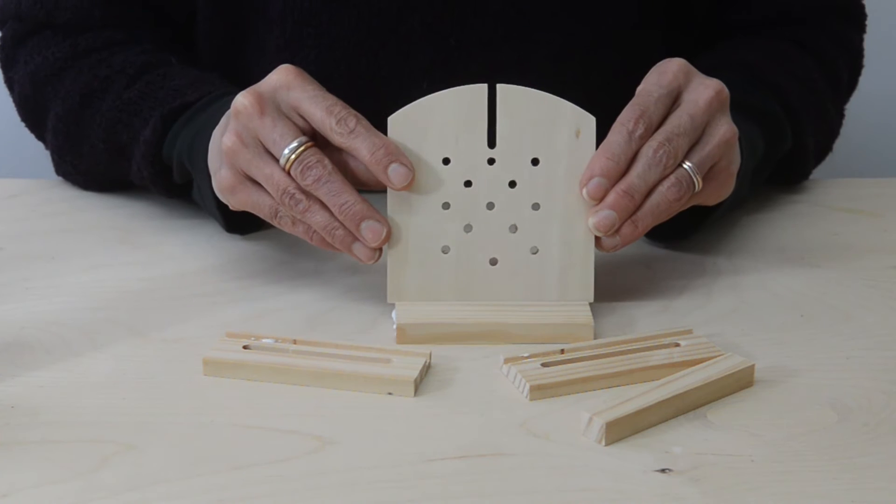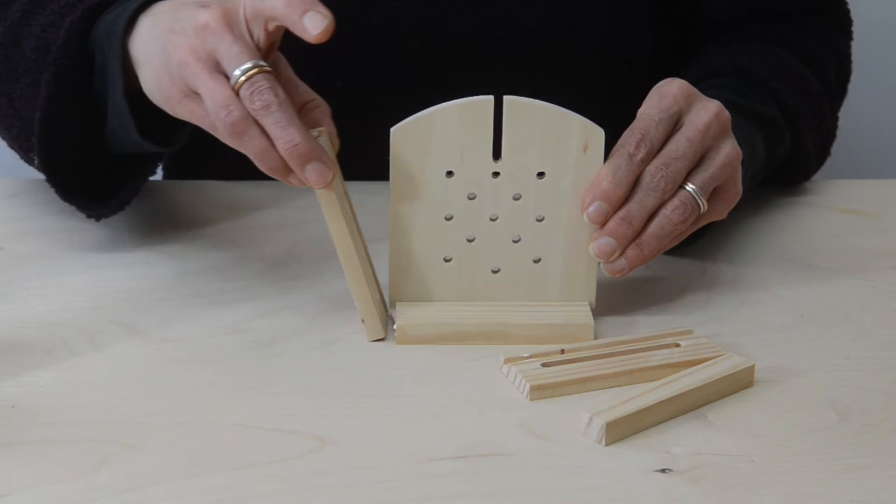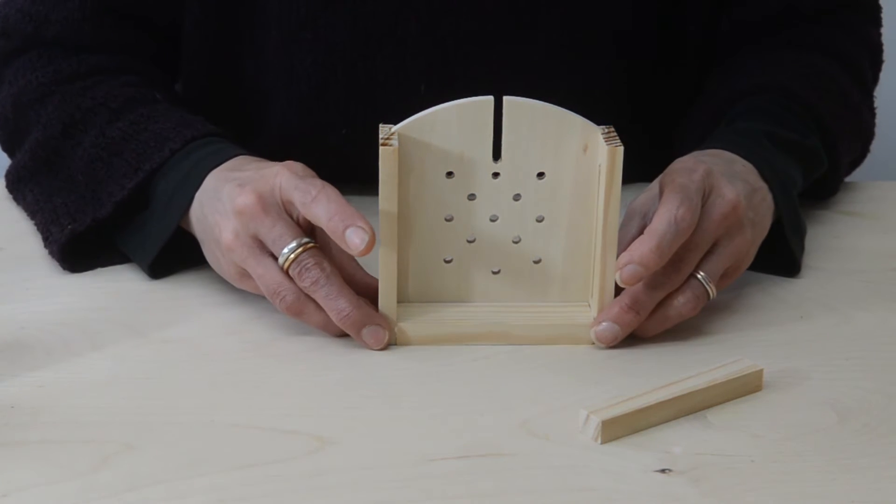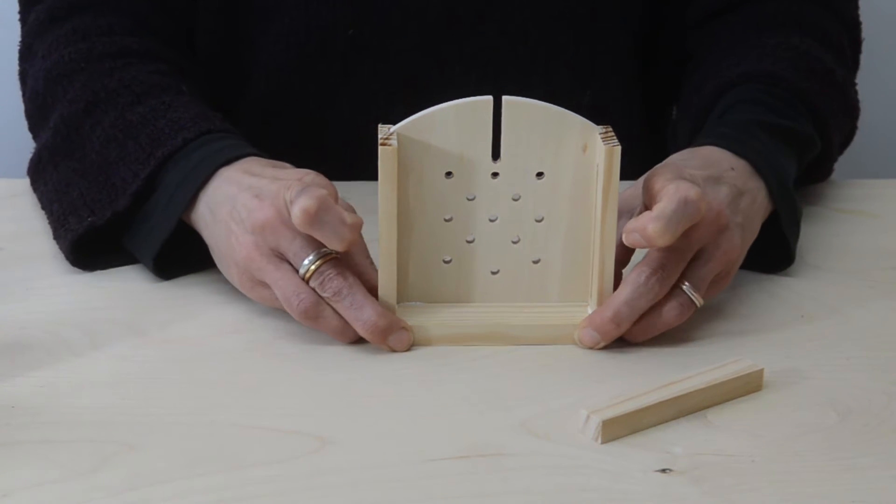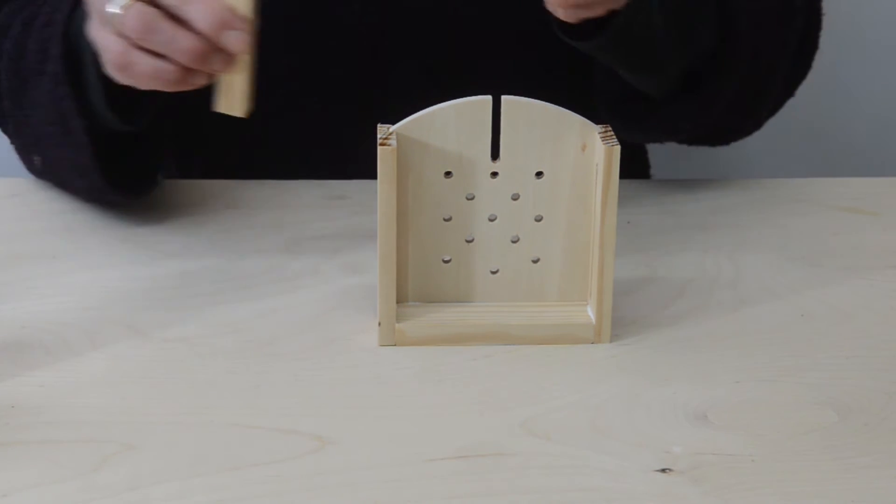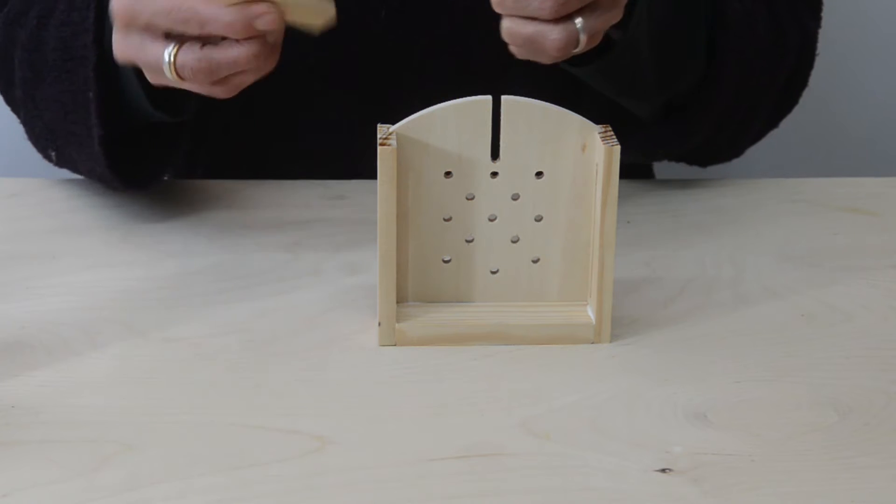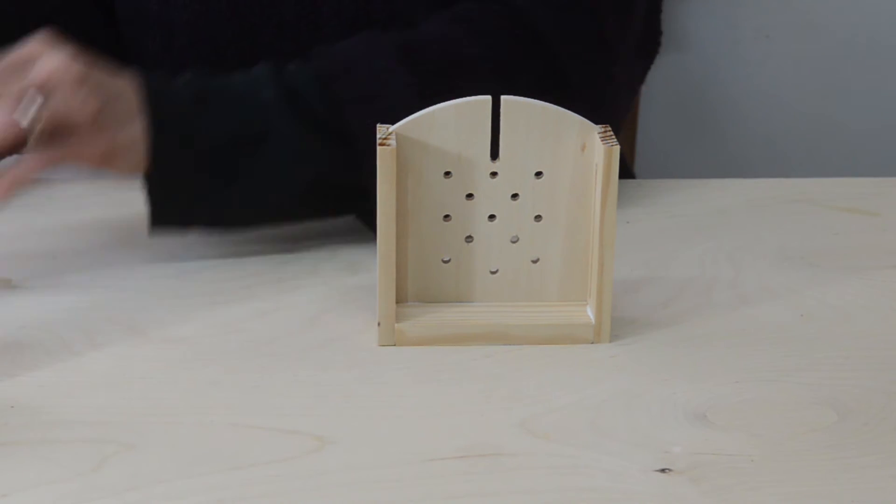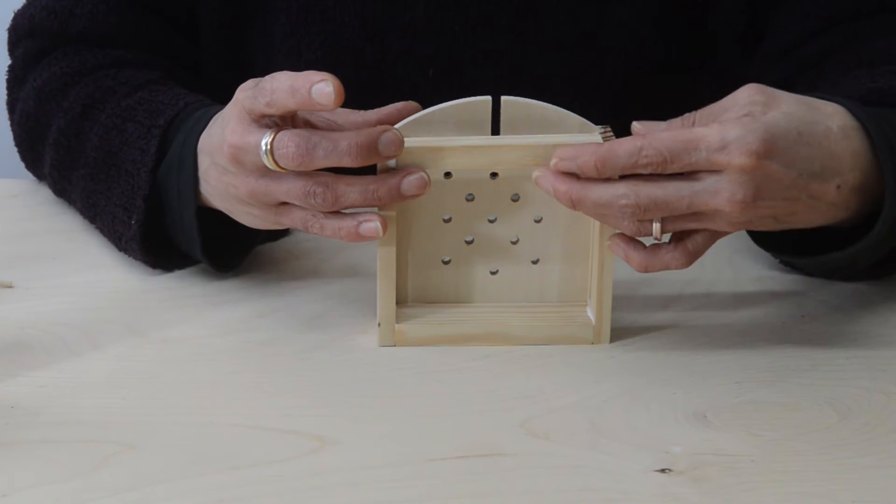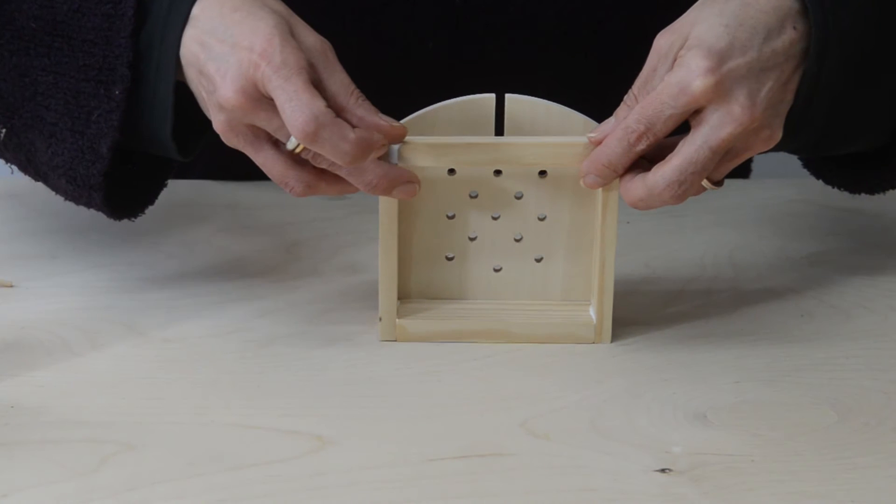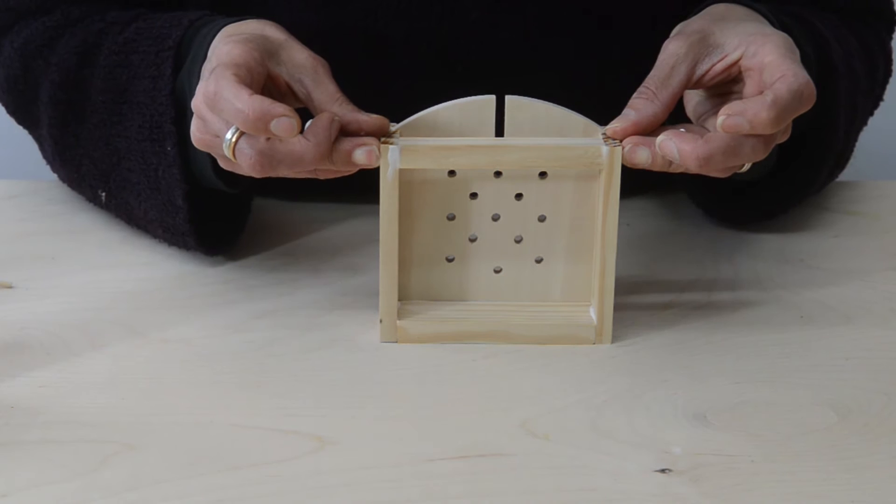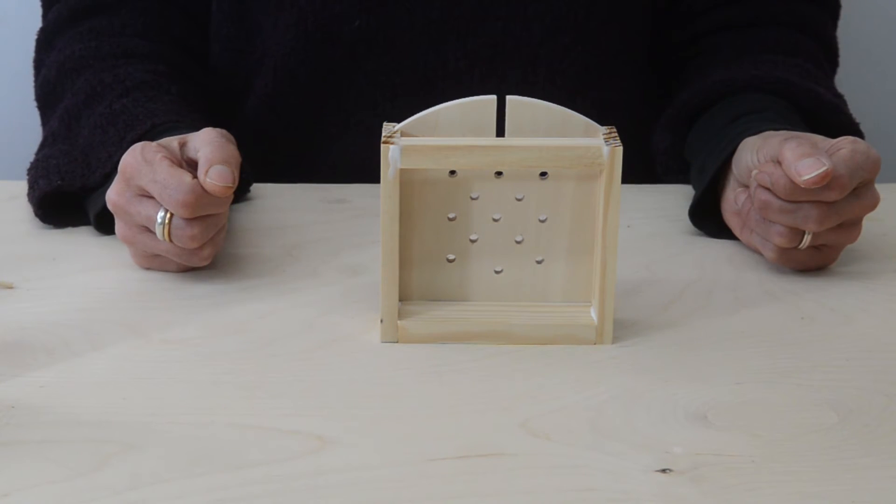Then the back fits in the groove and the two sides come up to join it. And then it should all fit together quite neatly. So the last piece is the top rail and we'll put a bit of glue at either end and slot it in the front and push the two sides together just to squeeze it together and then put it on one side to dry.